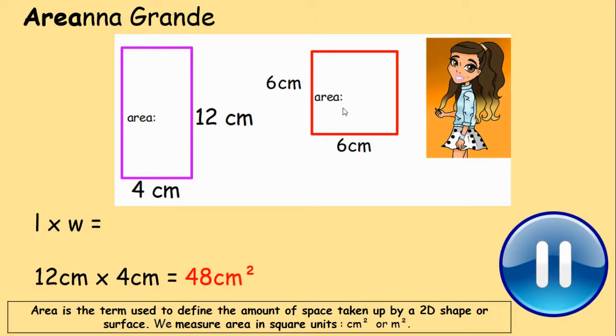Well done. I would need to multiply the length and the width. 12 centimetres multiplied by 4 centimetres gives me 48 centimetres squared. The area of the first shape would be 48 centimetres squared.